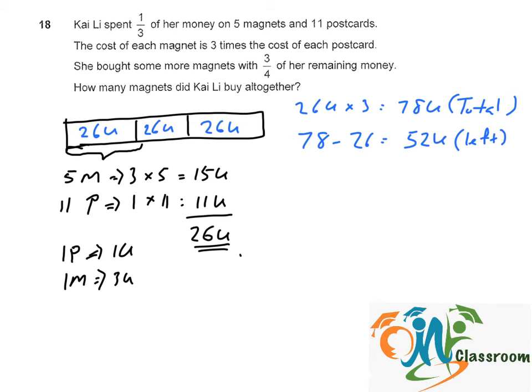Now she bought some more magnets with 3 quarters of her remaining money. That will be 3 over 4 multiplied by 52 units. That means she spent another 39 units on magnets.